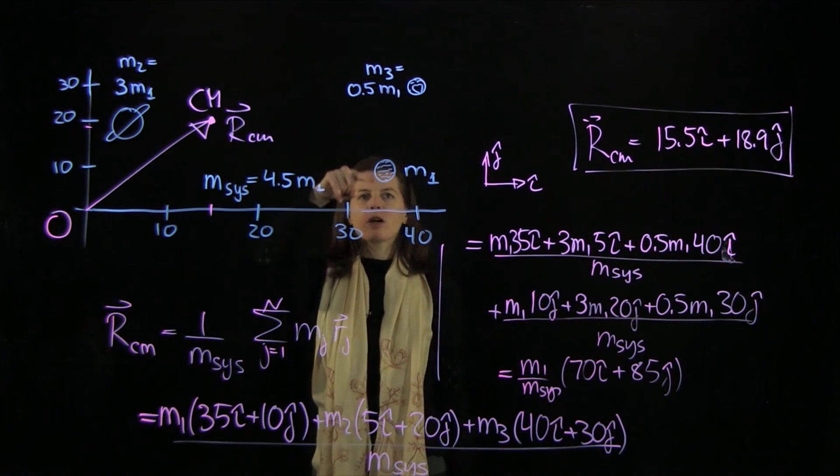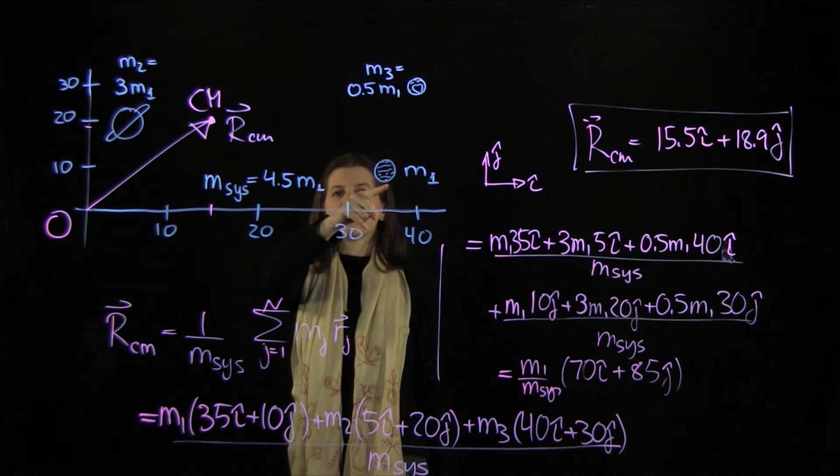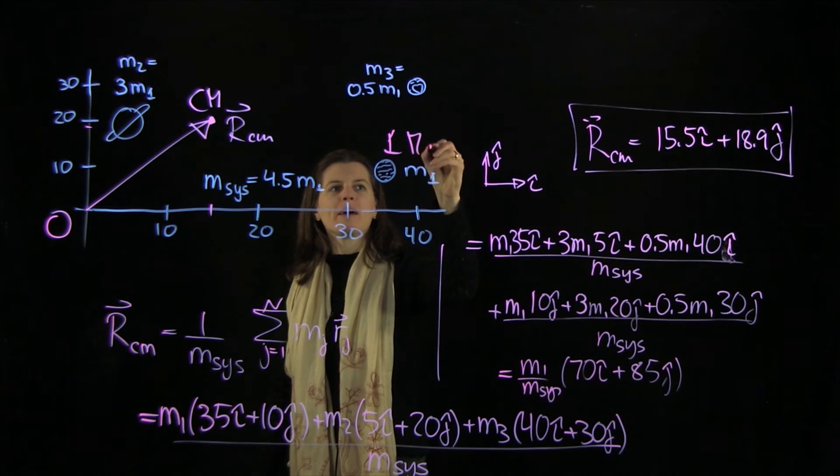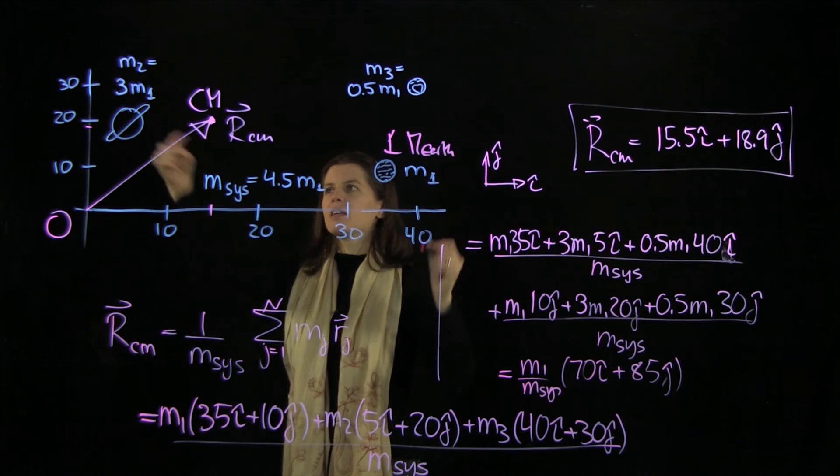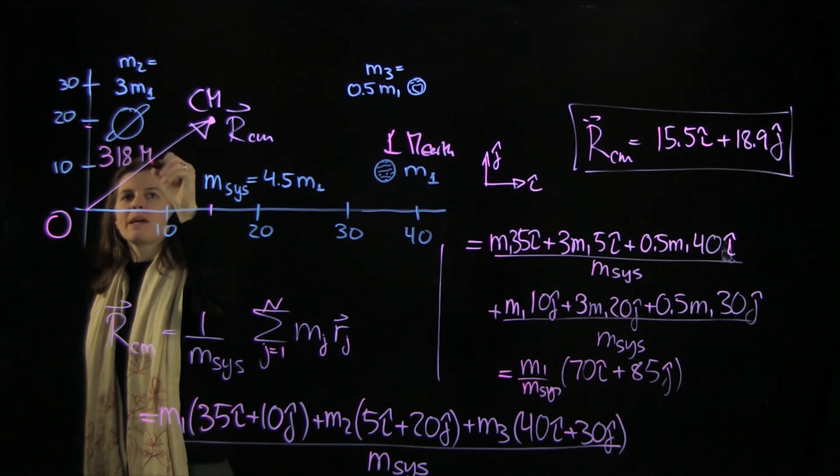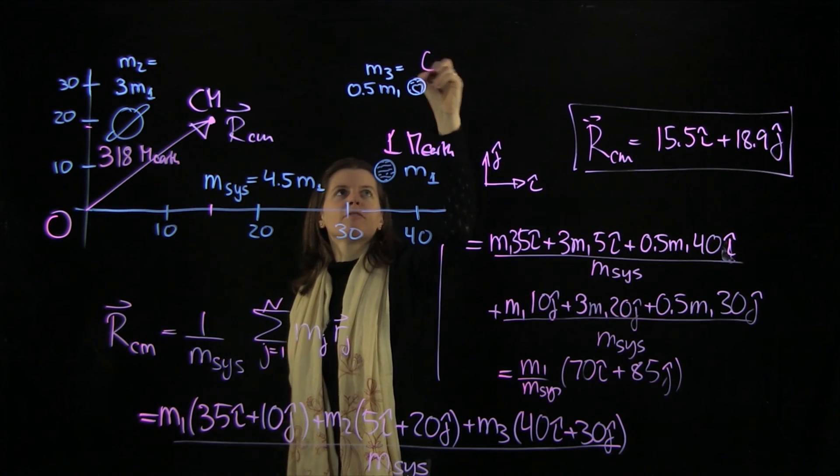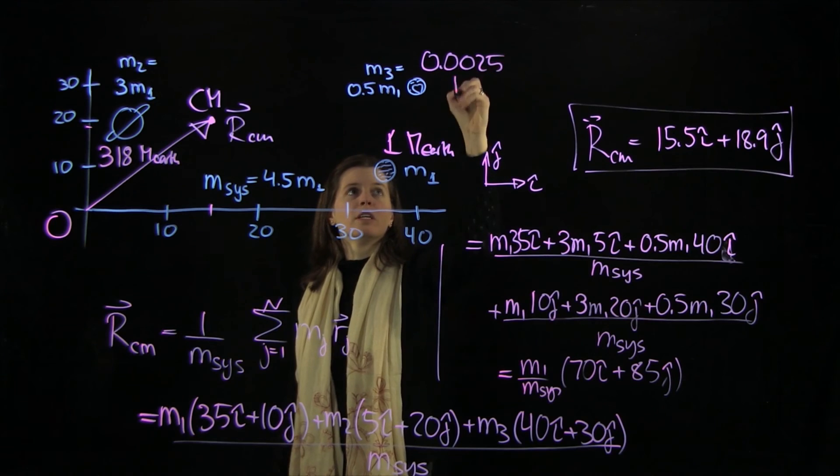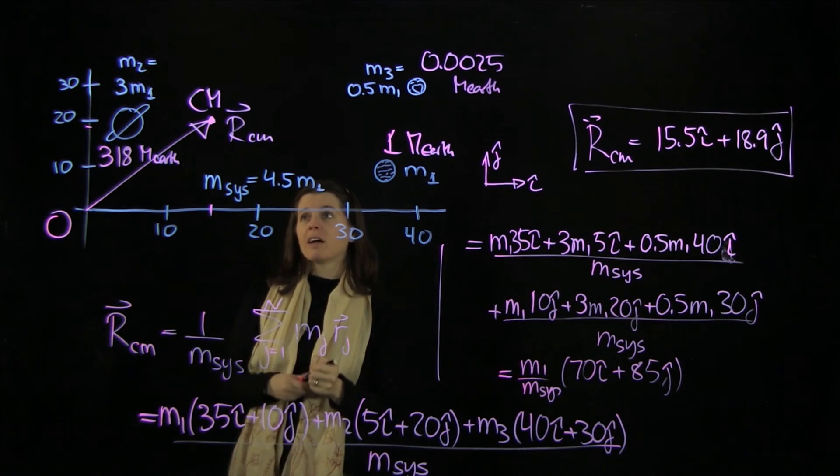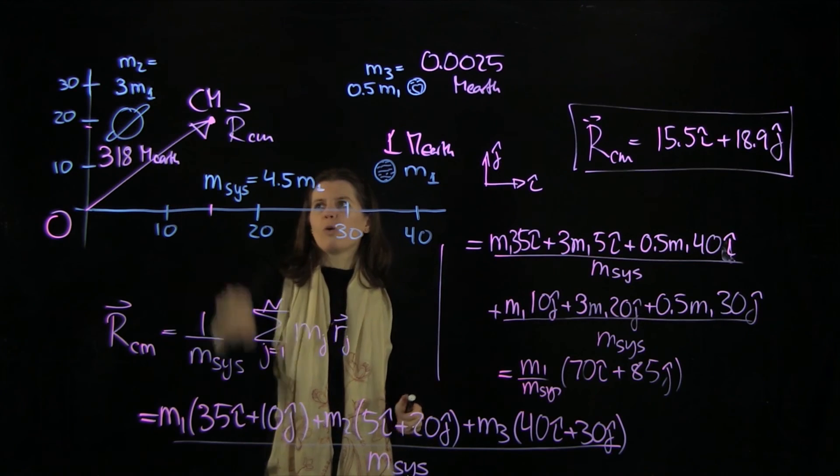Of course, we used approximate masses here for the planets. But if we look at the real numbers, imagine that this would be Earth with one Earth mass. And if those were Saturn, it would have something like 318 Earth masses. And if this is Pluto, it would have 0.0025 Earth masses.